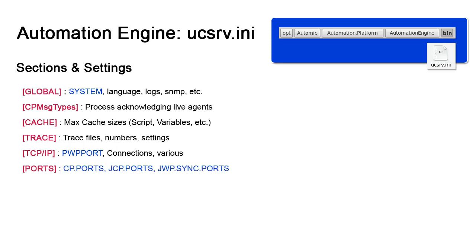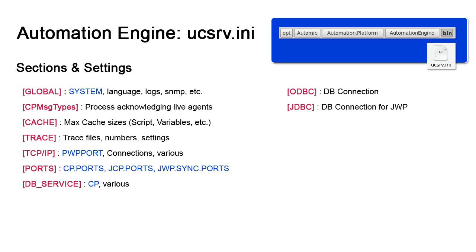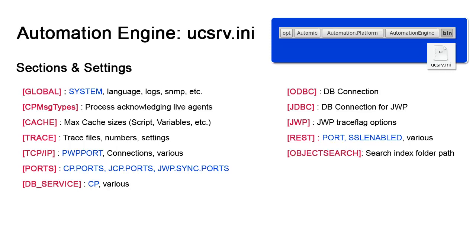Under Ports, we set the explicit CP port range. We can also set explicit ports for JCP and JWP if we decide against random allocation. Under DB Service, we find the important CP setting, which points to a host and port used by agents to communicate with the Automation Engine. We find other settings like the authentication package properties, database connection retention and retry times. The ODBC section contains the ODBC string for AE to connect to the database, set by the database type and other options. We also find the JDBC connection string for JWP. The JWP section contains some options for the trace flag. REST contains important information regarding the REST API connection, namely port, SSL activation, keystore, and parallel connections. Object Search contains the search index folder path. We also see the CAPKI section with certificate and private key paths, which is needed for secure communication with a service manager.